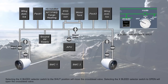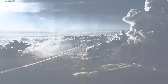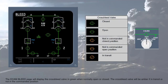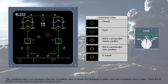Selecting the cross-bleed selector switch to the shut position will close the cross-bleed valve. Selecting the cross-bleed selector switch to open will open the cross-bleed valve. The ECAM bleed page will display the cross-bleed valve in green when normally open or closed. The cross-bleed valve will be amber if in transit or not in the commanded position. The cross-bleed duct is not displayed when the cross-bleed valve is closed and displayed in green when the cross-bleed valve is open. Touch the cross-bleed selector switch to open the cross-bleed valve.